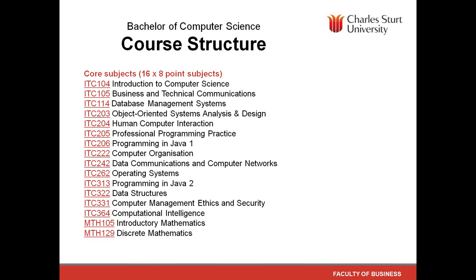Now let's move on to the Bachelor of Computer Science — our other main undergraduate program. Unlike the Bachelor of IT, it tends to have much more of a hardcore computing focus. It has 24 subjects overall, of which 16 are core subjects that everyone must do.